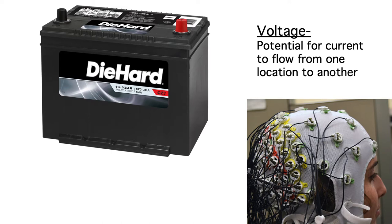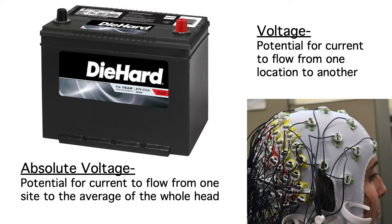However, there's a way to think informally about the voltage at a single electrode site, which we call the absolute voltage at that site. Specifically, the absolute voltage at an electrode site is the potential for current to flow between that site and the average of the entire rest of the head. It turns out that the voltage between two electrodes is equal to the difference between their absolute voltages.